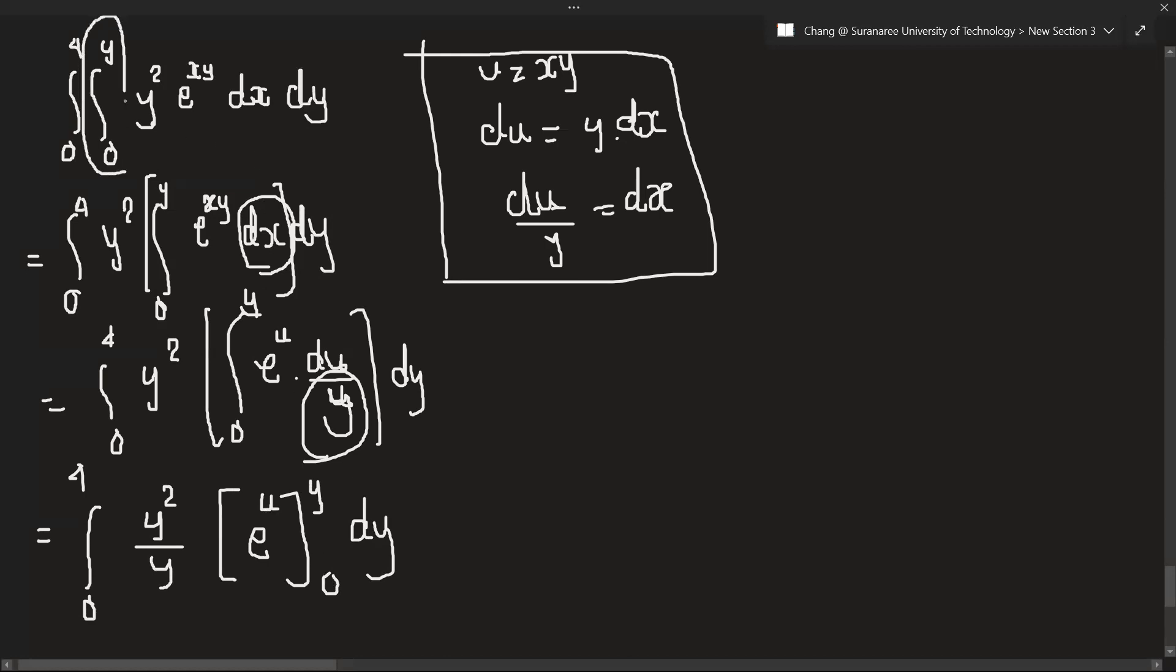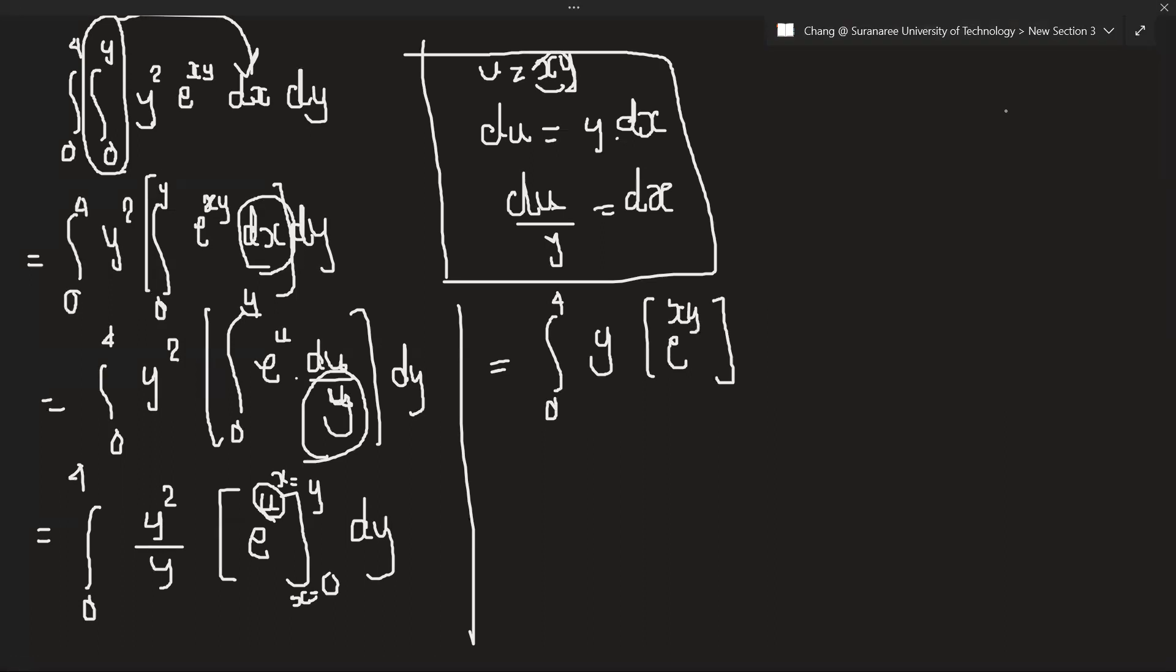One thing I want to write clearly is 0 to y—this interval is concerning x. So when x equals 0 to x equals 1, at the place of u, we have to insert the value of x, because we put u as xy. So let's insert the value here.